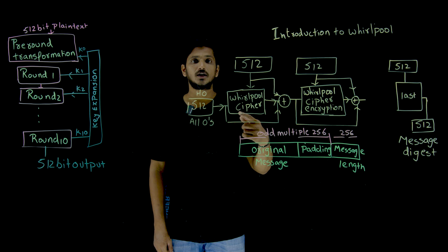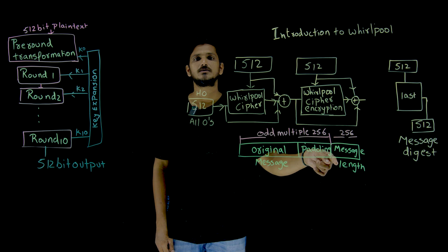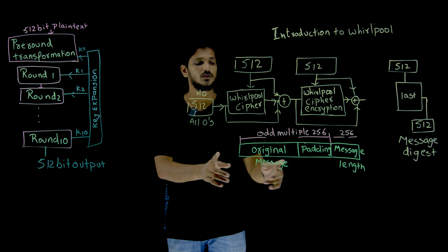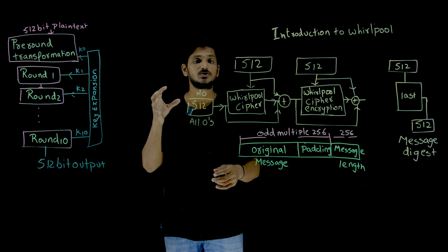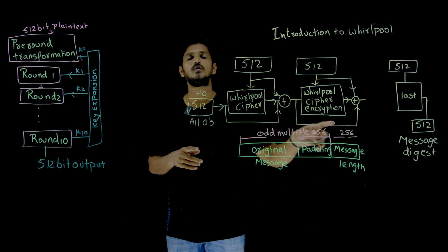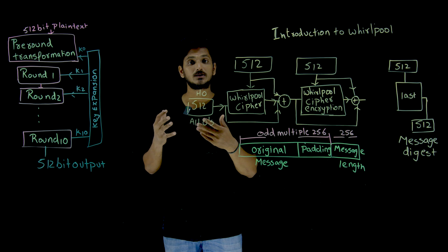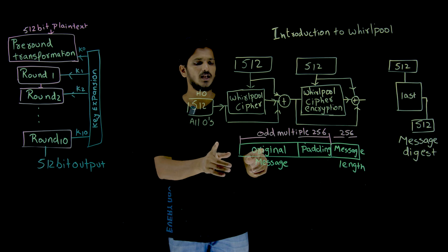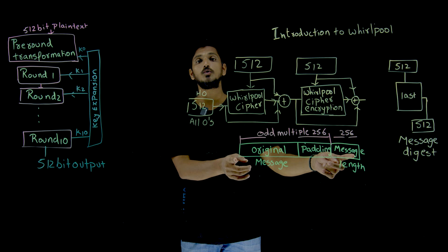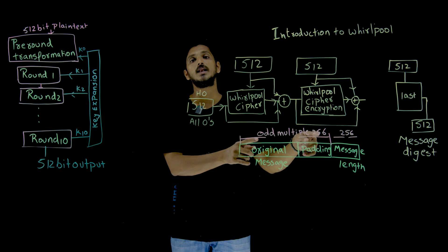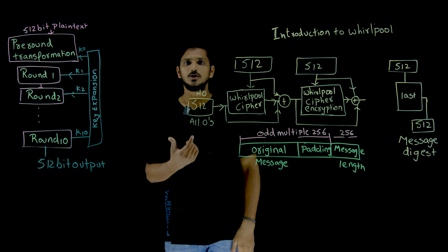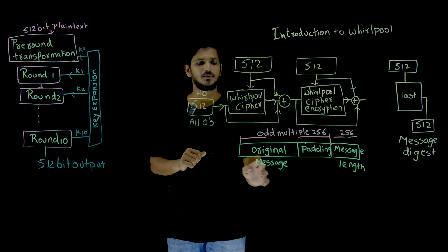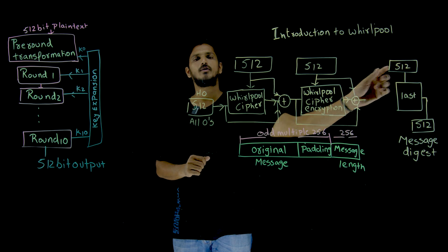For the message length field, 256 bits are allocated. This means Whirlpool accepts a maximum original message length of 2^256 bits. After adding the message length field, the total becomes an even multiple of 256 bits, and since two 256-bit blocks combine to 512 bits, the entire message is divided into 512-bit blocks: 512, 512, 512, and so on.